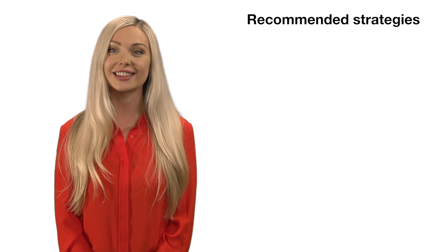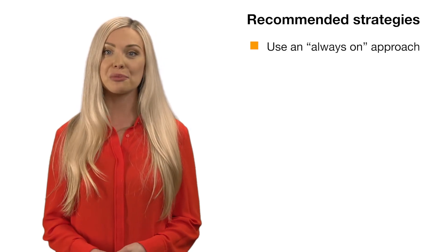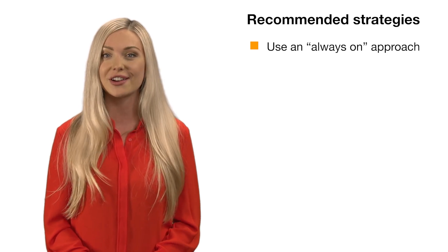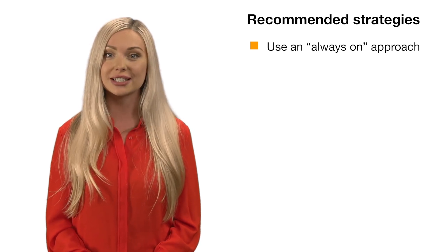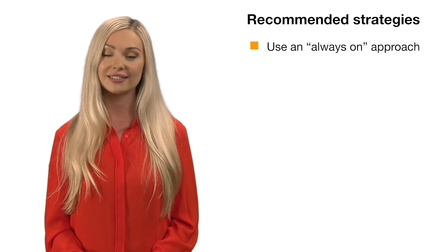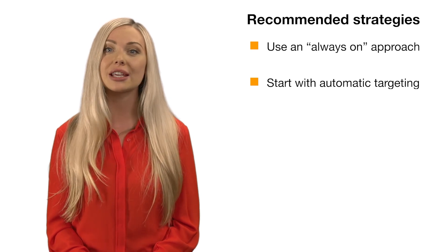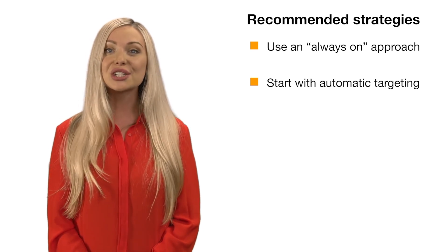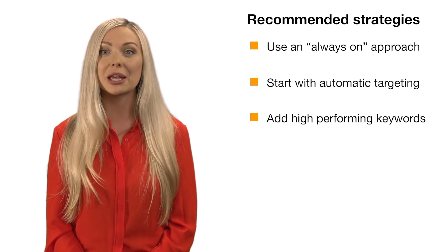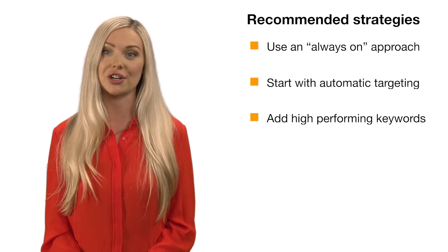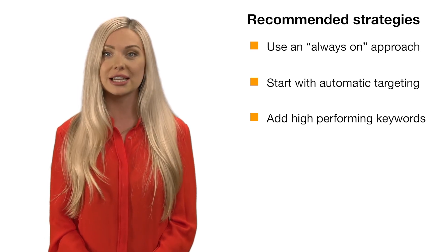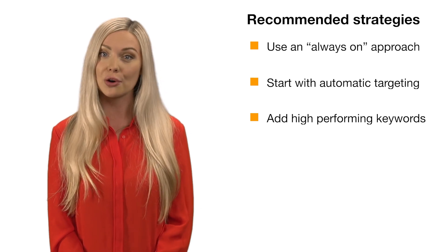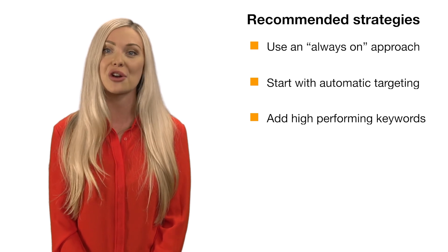Before we wrap up, let's review our recommended campaign strategies. Use an always-on approach — every sale throughout the year adds up, so don't miss opportunities to reach customers. Run your campaigns continuously without an end date to maximize the impact of sponsored products. Start with automatic targeting — let Amazon do the keyword research by leveraging its extensive e-commerce knowledge to automatically find the best performing keywords. Once your auto-targeting campaign has run for two weeks, add high-performing keywords to a manual targeting campaign. Automatic targeting is a powerful feature but is best leveraged when regularly managed and optimized. Automatic targeting gives you coverage while manual targeting offers control — pair them to refine your bids and double down on high-performing keywords.